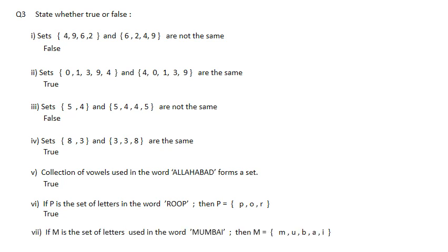If M is the set of letters used in the word 'Mumbai', then M = {m, u, b, a, i}. Note that M is repeated in the word but we write it only once. So the set has five distinct elements. The answer is true.